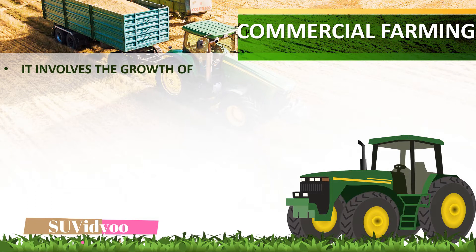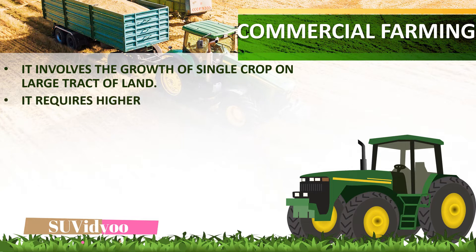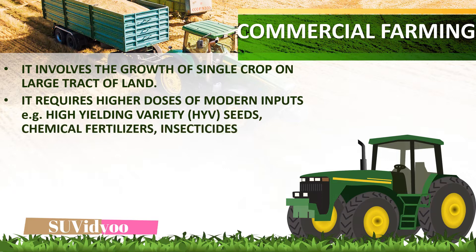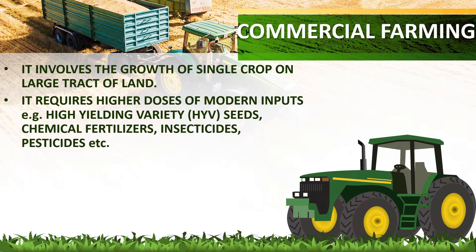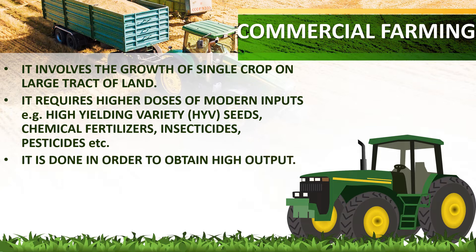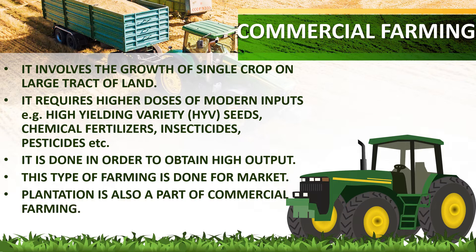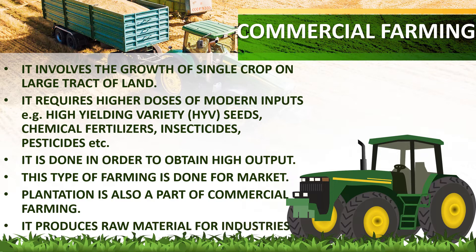Commercial farming involves the growth of a single crop on a large tract of land. It requires higher doses of modern inputs, for example, high yielding variety of seeds, chemical fertilizers, insecticides, pesticides, etc. It is done in order to obtain high output and is done for the market. Plantation is also a part of commercial farming, and it produces raw materials for industries.